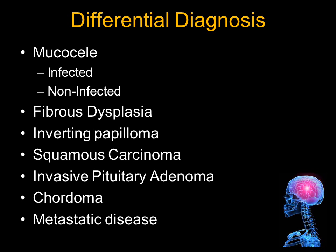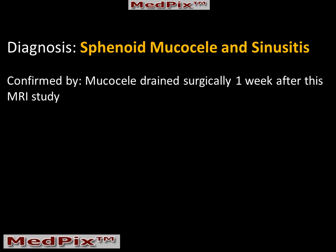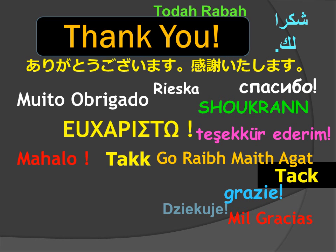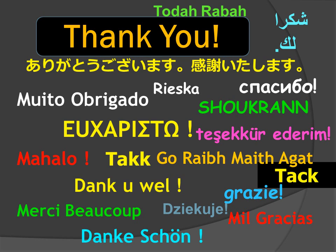The differential diagnosis would include, in addition to mucocele: fibrous dysplasia, inverting papilloma, squamous carcinoma, invasive pituitary adenoma, chordoma, and metastatic disease for a lesion involving the sphenoid bone. However, in our case the lesion is homogeneous, and it was surgically treated with drainage of the mucocele. This has been a case of a sphenoid sinus mucocele, complicated by enlargement and erosion and skull base invasion involving the cavernous sinus. Thank you very much for your attention. I'm Jim Smyrniatopoulos, and I approve this message.